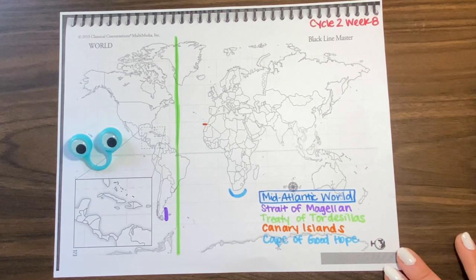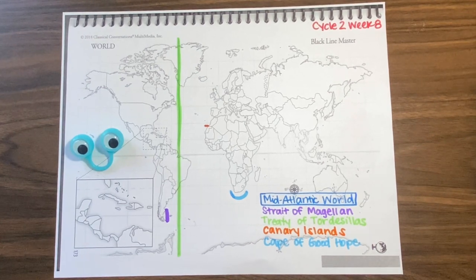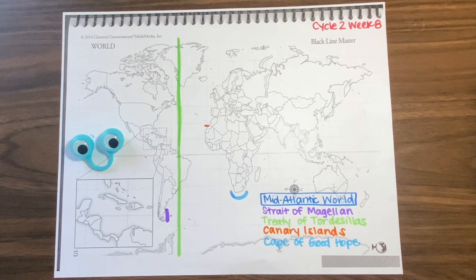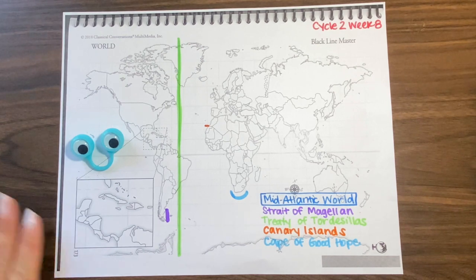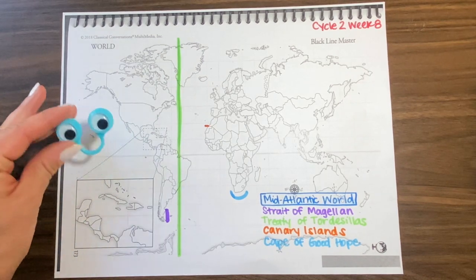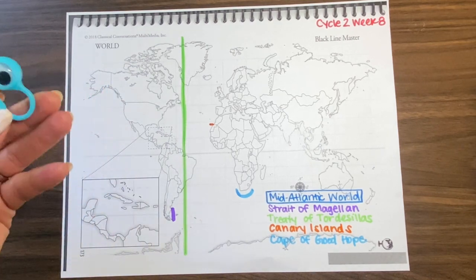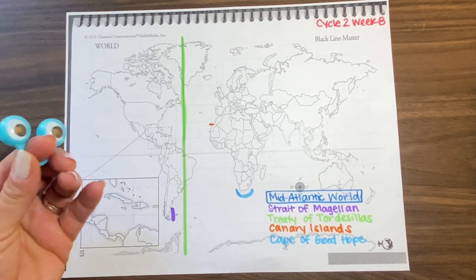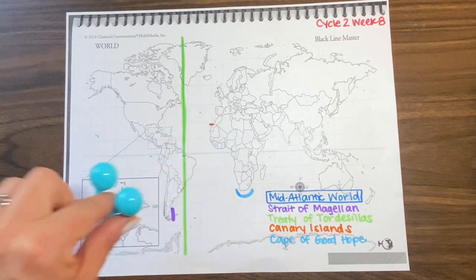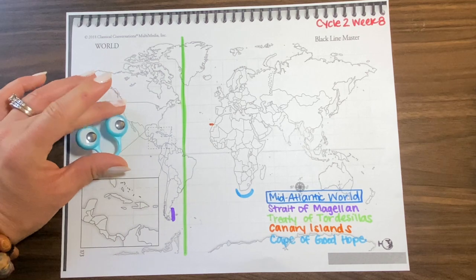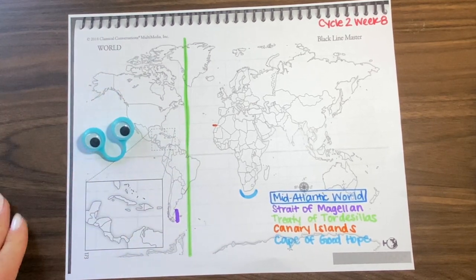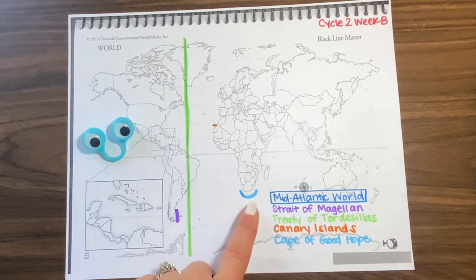We're doing the mid-Atlantic world, which has to do with the Age of Exploration — explorers sailing out of Portugal and Spain to discover the New World and map unknown places. I'm going to give my class little googly eyes to move around the map; they'll color a blank map. If I had little boats that would be cute, but the googly eyes work like an explorer looking through a telescope.